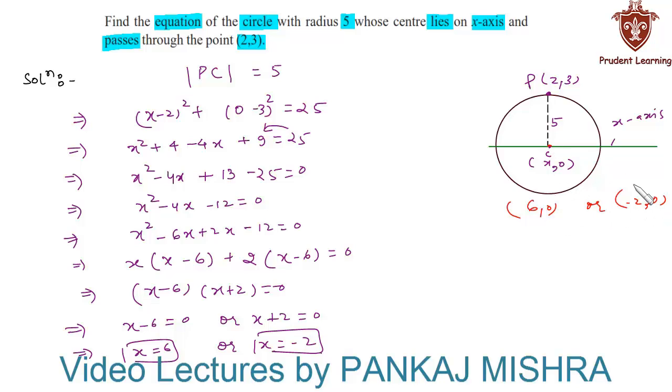And now we know that the equation of a circle is given by (x-h)² + (y-k)² = r², where h and k are coordinates of the center and r is the radius of the circle.